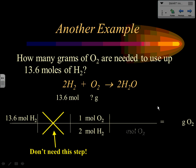Looking at step three: I'm in moles of oxygen but I need grams of oxygen, so yes, I need step three. Moles of oxygen go on the bottom to cancel; grams of oxygen go on top. Using molar mass, one mole of oxygen is 32.0 grams. The calculation is 13.6 × 32.0 ÷ 2. Each measured value has three significant digits, so the answer rounds to 218 grams of oxygen.